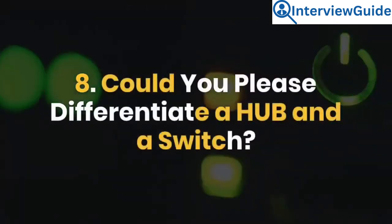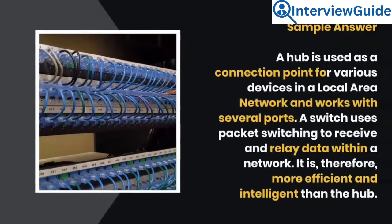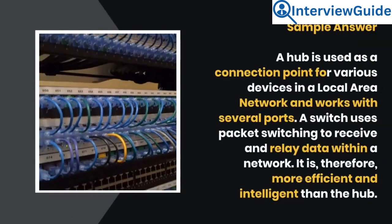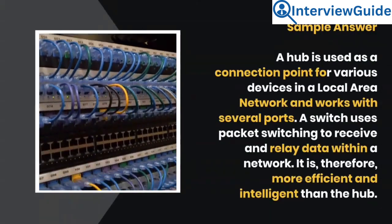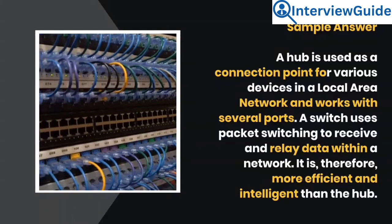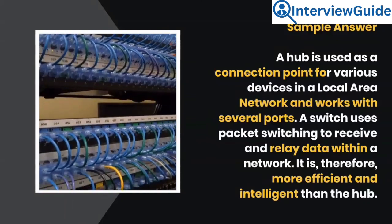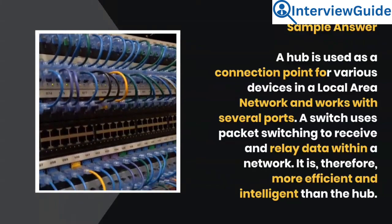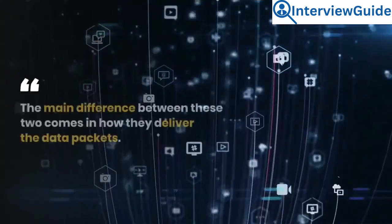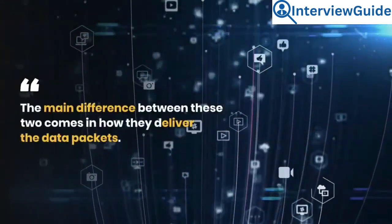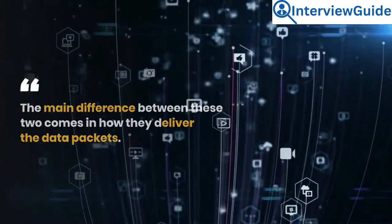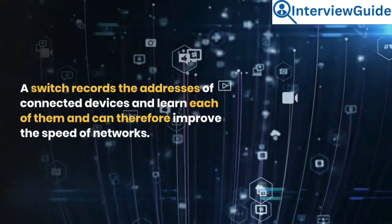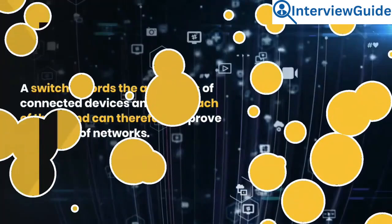Question 8: Could you please differentiate a hub and a switch? A hub is used as a connection point for various devices in a local area network and works with several ports. A switch uses packet switching to receive and relay data within a network. It is therefore more efficient and intelligent than the hub. The main difference comes in how they deliver data packets — a switch records the addresses of connected devices, learns each of them, and can therefore improve network speed.